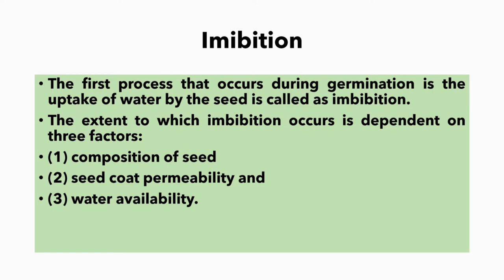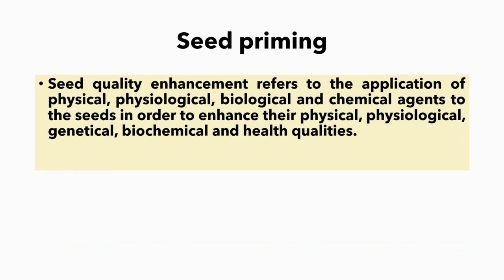Imbibition is the first process that occurs during germination. The uptake of water by the seed is called imbibition. The extent to which imbibition occurs is dependent on three factors: composition of seed, seed coat permeability, and water availability. Friends, we have completed seed germination as a part of chapter 8.